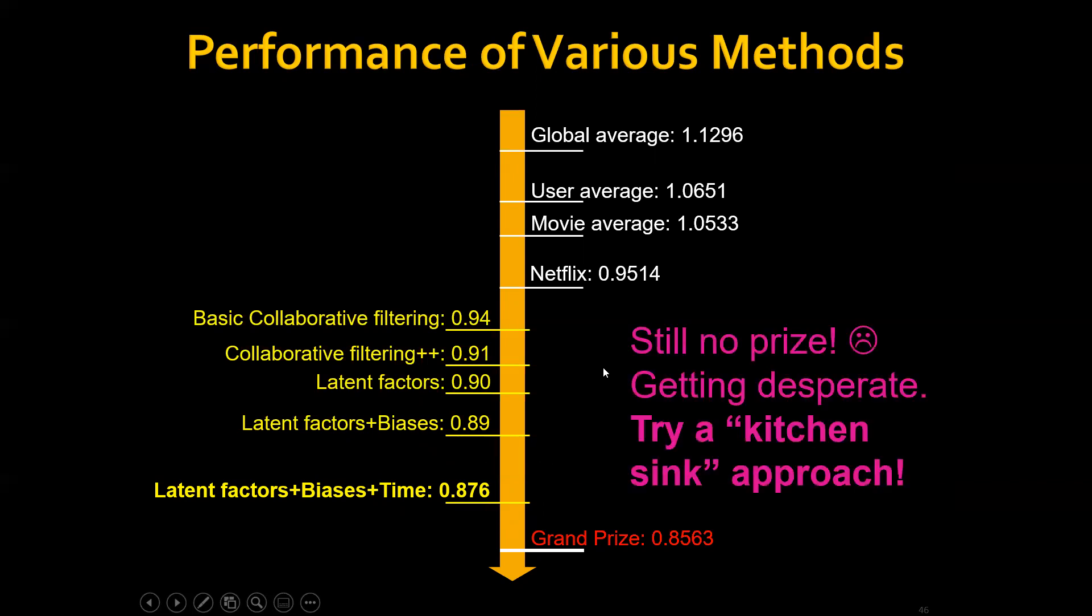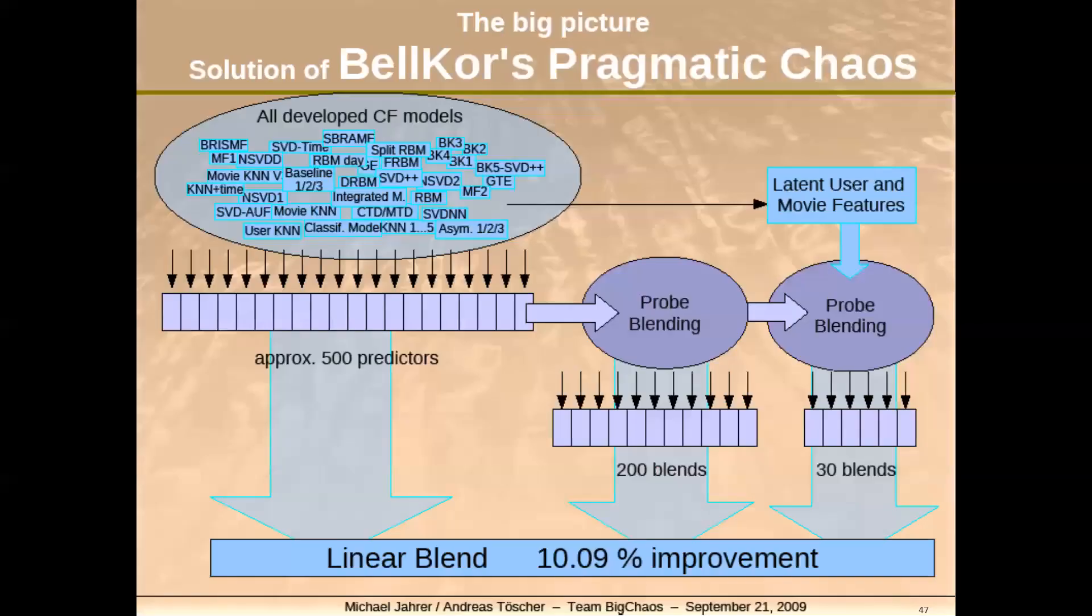At this point, you might get desperate and you might try a kitchen sink approach or what we call an ensemble approach. This is actually exactly what the winning team did at the time. They actually use a pool of about 100 methods.